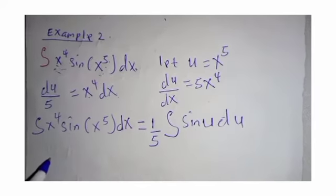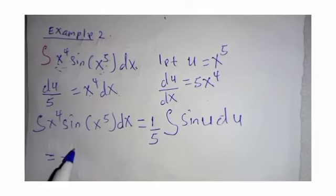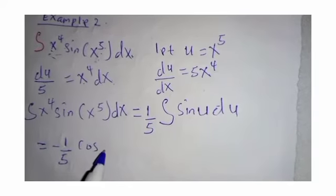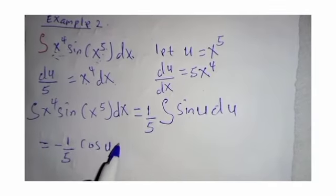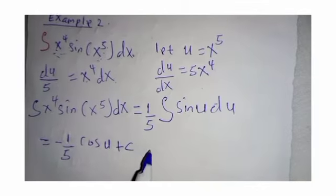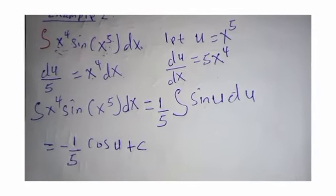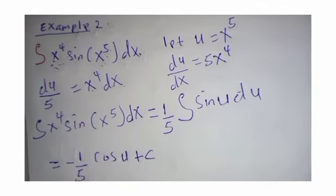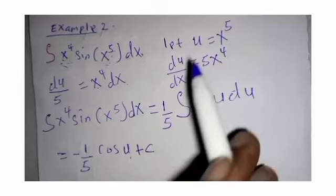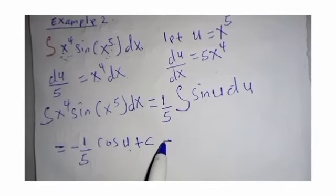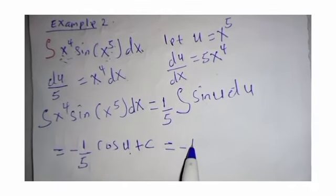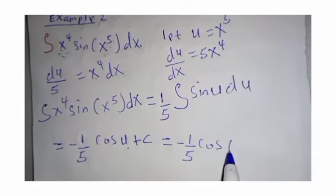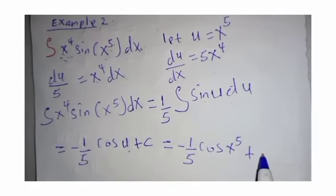So this is equal to negative 1 over 5 cos of u plus c. Well, c is a constant. So we can substitute u with x power 5, which is equal to negative 1 over 5 cos of x power 5 plus c.